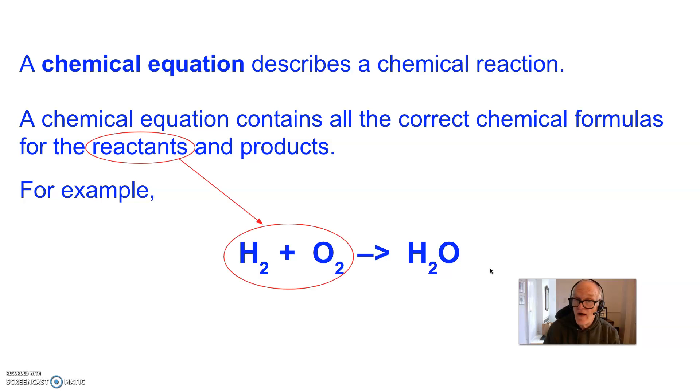The reactants are the things that are on the left side of the equation. They're the things that were there before the reaction happened. The products are on the right side of the arrow, the end of the chemical equation. In this case, there's only one. It's what is there after the chemical reaction occurred.